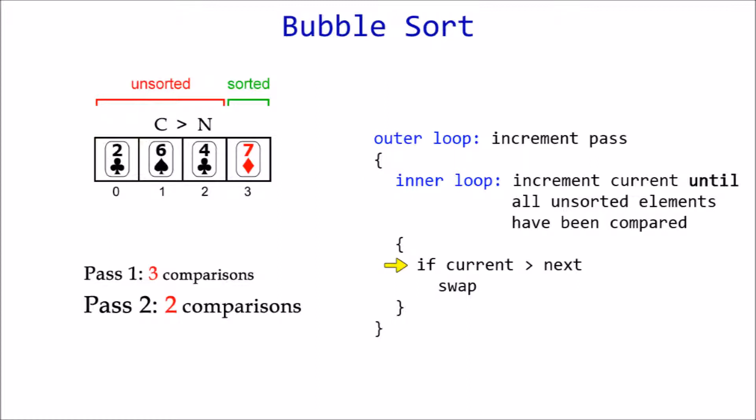Again, six is greater than four, so they're swapped. All elements have been compared, so six joins seven in the sorted section.